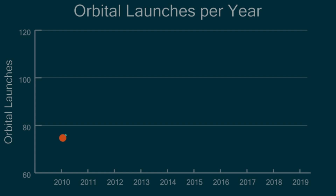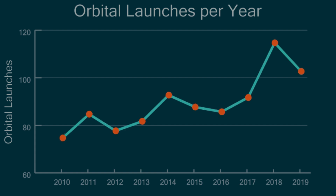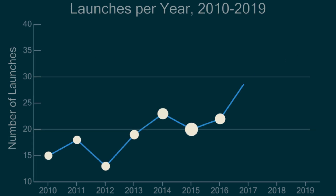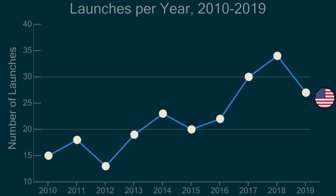How has the number of orbital launches changed over the last decade? By looking at this graph, we can see a gradual increase from 2010 to 2019, with 2018 having the most launches at 114. Looking at the United States by themselves, there are some large fluctuations — as few as 13 launches in 2012 and up to 34 orbital launches in 2018. China, by contrast, remained fairly consistent in the early 2010s and has performed many more launches in recent years.